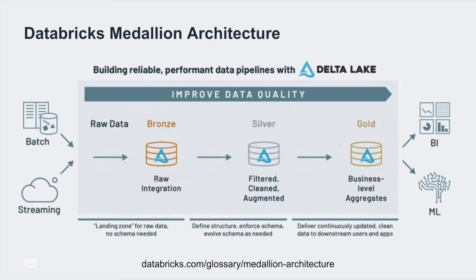Databricks is an industry leader in the data lake space and has developed one of the best and simplest architectures for organizing a data lake. Here we see the Databricks medallion architecture. A medallion architecture is a data design pattern used to logically organize data in a lake house, incrementally improving the structure and quality of data as it flows through each layer, from bronze to silver to gold layer tables. Medallion architectures are sometimes referred to as multi-hop architectures. Note the three distinct areas: first, the bronze or raw data; then the silver or augmented data; and finally the gold or curated data. This architecture is what we will replicate on AWS as we build out our data lake.